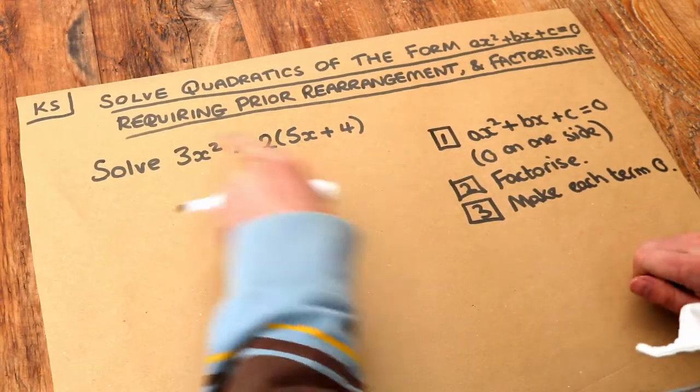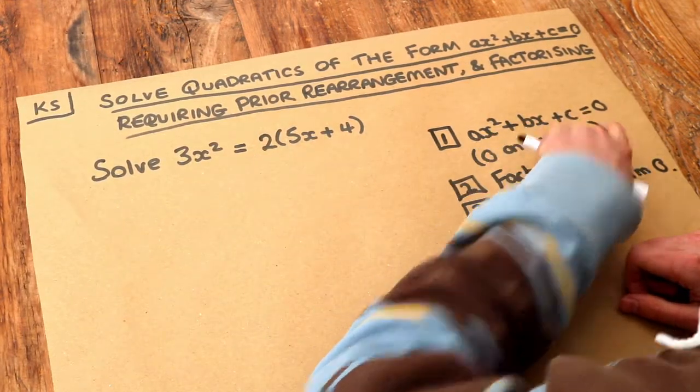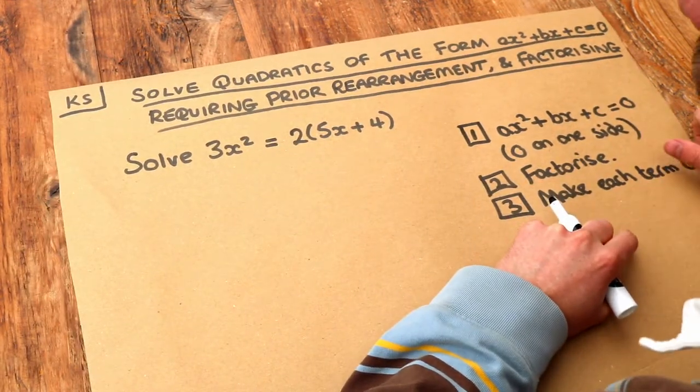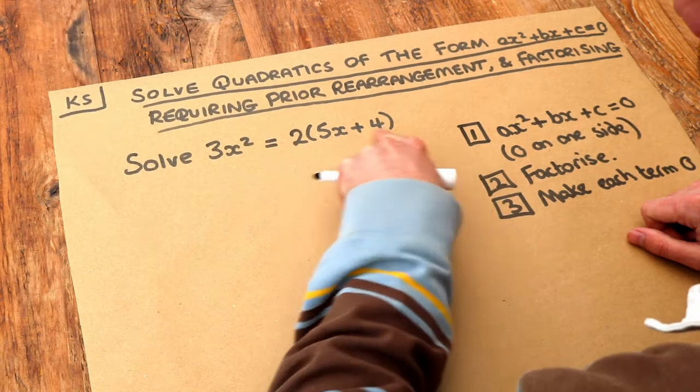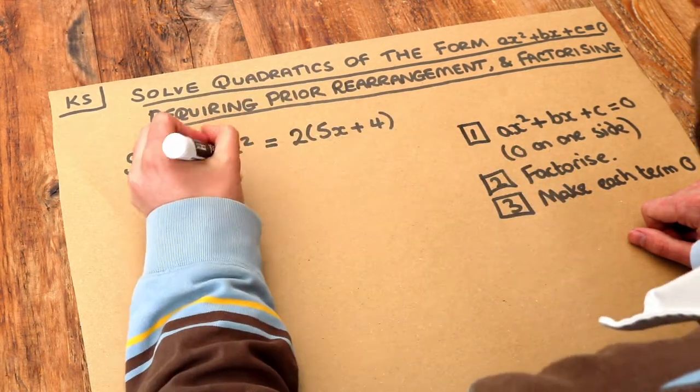So we first need it in the form something X squared plus something X plus something equals zero, so we want zero on one side. Now, a good first step is to get rid of this bracket by expanding it.